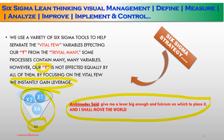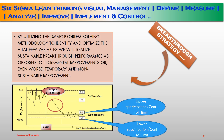To recap: we use a variety of Six Sigma tools to separate the vital few variables affecting Y from the trivial many. Some processes contain many variables; however, Y is not affected equally by all of them. By focusing on the vital few, we instantly gain the leverage we need. Now, the breakthrough strategy: we utilize the DMAIC — Define, Measure, Analyze, Improve and Control — problem solving methodology to identify and optimize key variables to realize sustainable breakthrough performance, as opposed to incremental or temporary, non-sustained improvement.